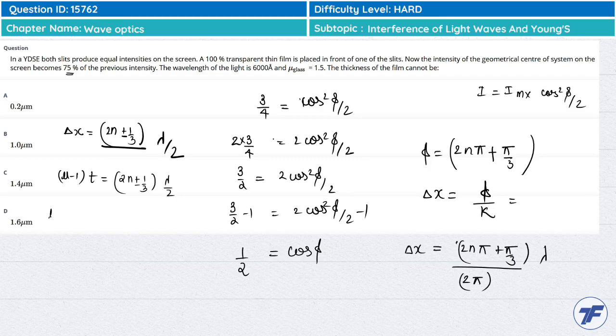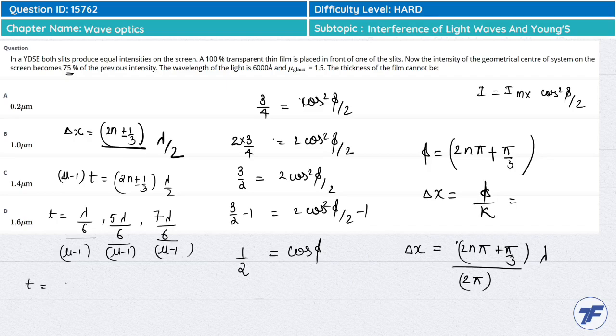If we see what values of t are coming, if I put n value as 0, then taking the minus sign, we start with λ/6. If I put n value as 1, taking minus I get 5λ/6, and taking plus I get 7λ/6. So t will have division by (μ - 1) for these values.